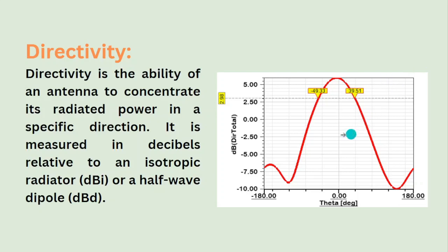This is a plot which represents the directivity of an antenna. Here we can see the maximum directivity is at theta equals 90 degrees for this particular case, and it has a half-power beamwidth point at 2.98 dB.